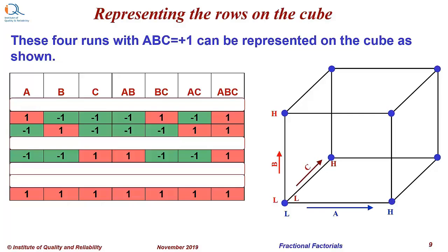These four runs with ABC equal to plus 1 can be represented on the cube as shown below. First row: A is at high level and B and C are at low level. Second row: B is at high level and A and C are at low levels. Third row: C is at high level and A and B are at low level. Fourth row: A, B, and C are all at high levels. These are shown by the four points on the cube. The remaining four points we are not going to run in this half fractional design.